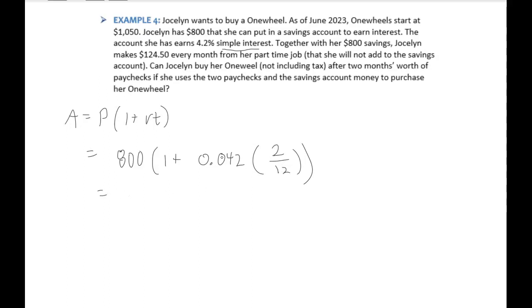So simplifying this, I would do the 0.042 times two divided by 12. Do this multiplication first, and then add one. That result is 1.007. And then second, I would do this multiplication. That gives $805.60. Now that is the amount in the account. So Jocelyn wants to know, can I purchase my one wheel after two months if I use my paychecks and the future amount in the account?